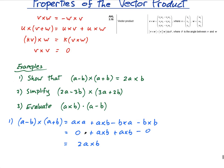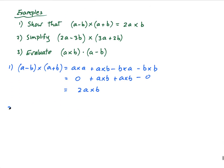So, okay, next one, question two, simplify. Let's write it down, (2a-3b) cross (3a+2b).